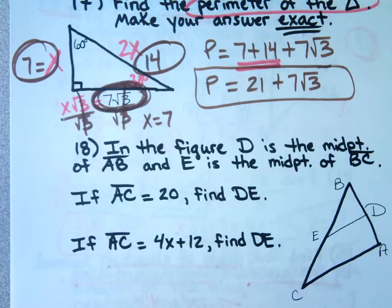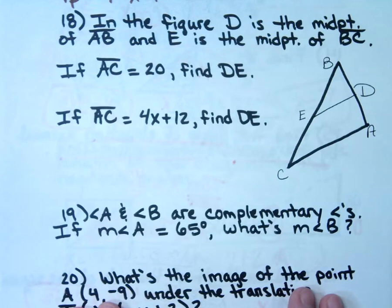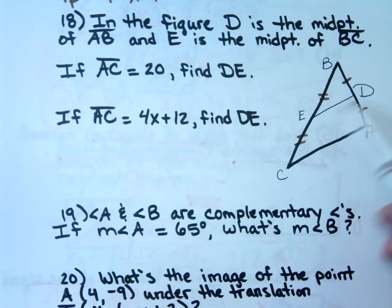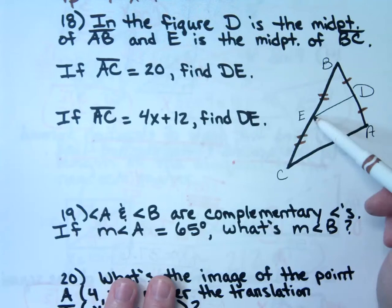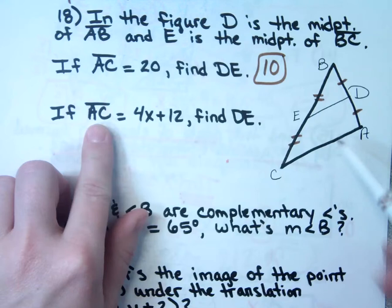Number 18: in the figure, D is the midpoint of AB and E is the midpoint of BC, so those two pieces are equal. That makes DE a mid-segment. The mid-segment is half the length of the bottom piece. So if the bottom piece is 20, DE would be 10. If AC is 4X + 12, then DE the mid-segment would be 2X + 6.